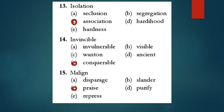Isolation means remaining isolated. Seclusion means remaining secluded, away from others. Segregation means separation. So the right answer will be association. Invincible means somebody who cannot be defeated, somebody who cannot be conquered. So the right option will be conquerable. Malign - disparage and slander are synonyms of malign, meaning spoiling somebody's name. Praise will be the right option. The opposite of malign is praise.